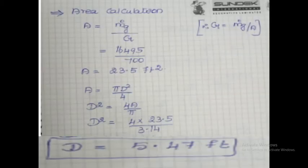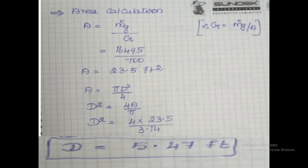We are going to calculate the area. Area formula: area equals M-dot-G divided by G, where M-dot-G is the flow rate of air and G is the mass velocity. This comes from the mass velocity expression: mass velocity equals mass flow rate divided by area. M-dot-G is the calculated value and mass velocity is given data. Substituting, the area equals 23.5 square feet. Since area equals π D² divided by 4 for a rotary dryer, the diameter is 5.47 feet.